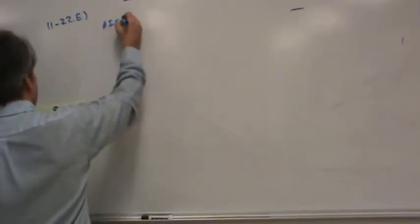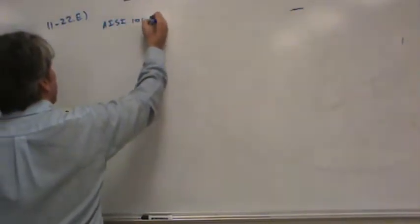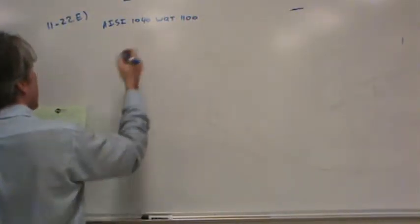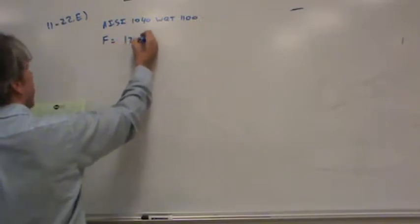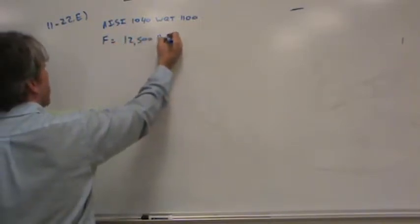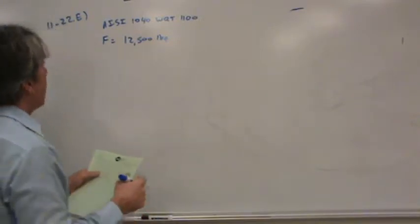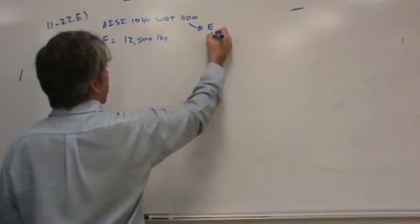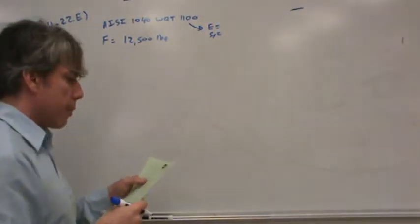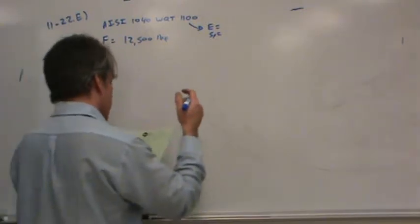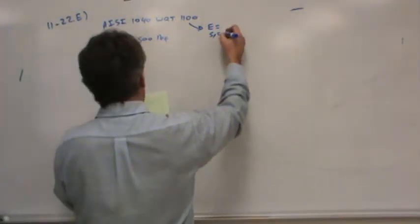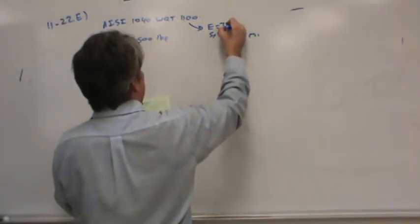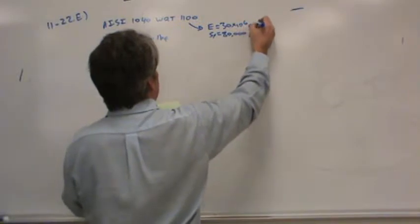Let's start off with what was given, AISI 1040 WQT, that's water quenched and tempered at 1100 degrees. And the applied force to the rod is 12,500 pounds force. Some of the properties we're going to need will be material properties, things like the elastic modulus and yield strength. If you look up the properties of 1040 at this treatment condition, you'll find that the yield strength is 80,000 PSI and the elastic modulus is 30 times 10 to the sixth PSI.